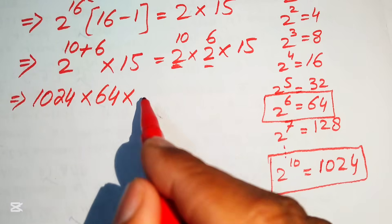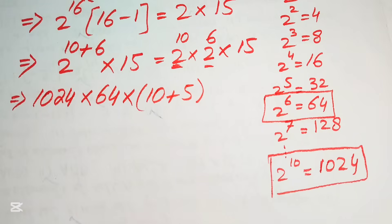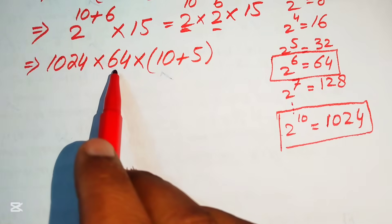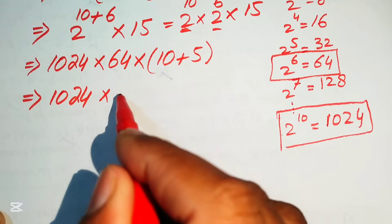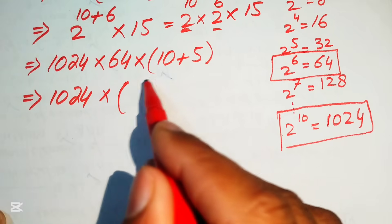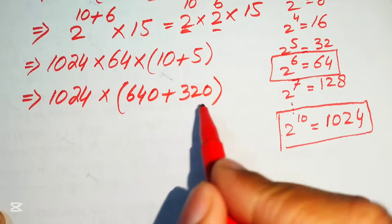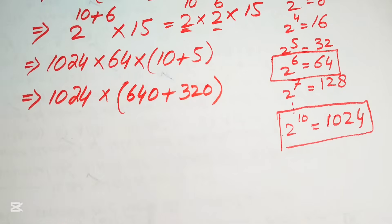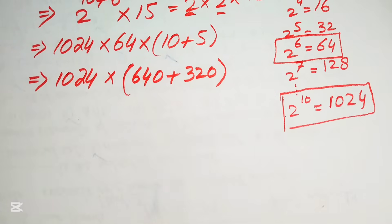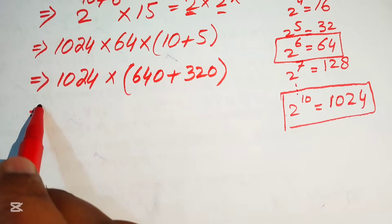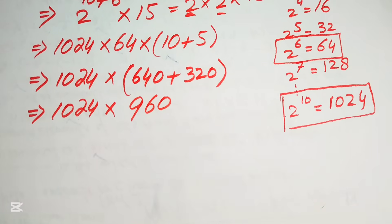We write 15 as 10 plus 5. We then multiply 64 by both terms: 64 times 10 equals 640, plus 64 times 5 equals 320. You multiply these terms using the traditional method of multiplication. After that we add those two terms: 640 plus 320 equals 960. So the expression becomes 1024 multiplied by 960.